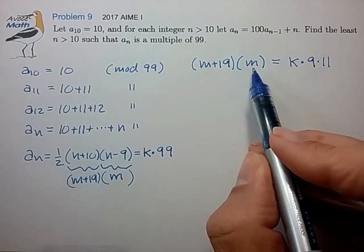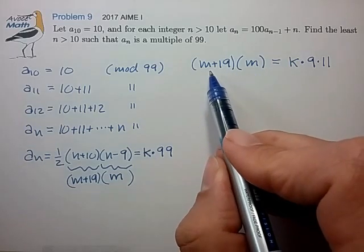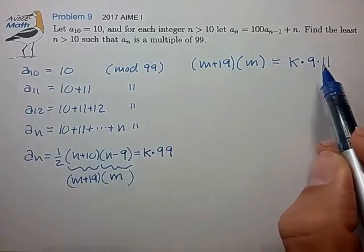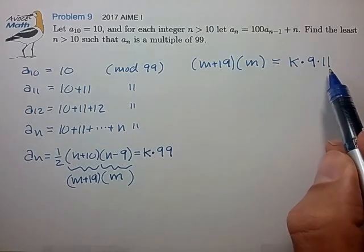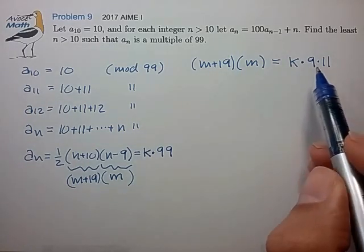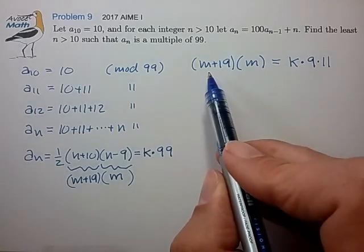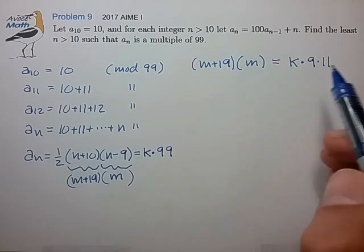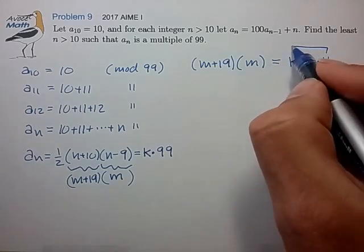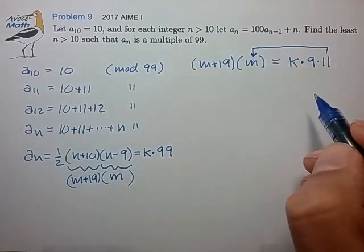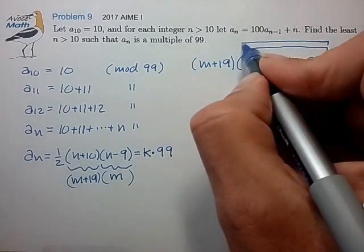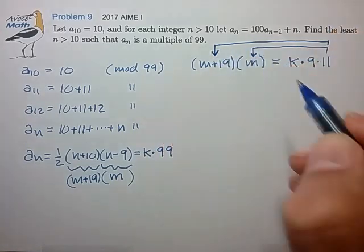Essentially we have a product of two numbers where we're looking for the condition where these two numbers pick up both the factors of 9 and the factor of 11. Now I don't see an easy way to figure out which is the lowest value of m that does that, so we'll have to look at the cases where we apply the factor of 11 to the m variable and the case where we apply the factor of 11 to the m plus 19 variable.